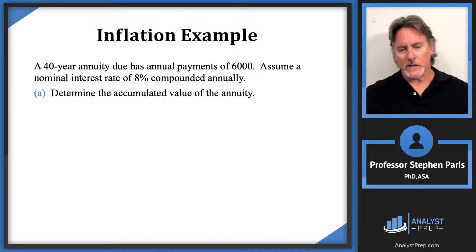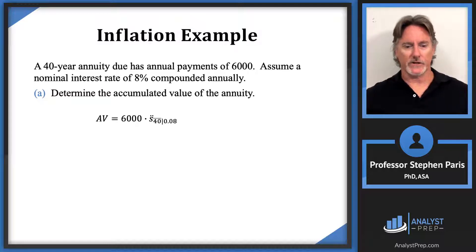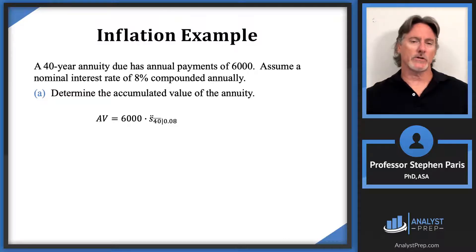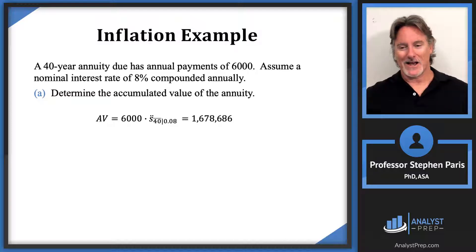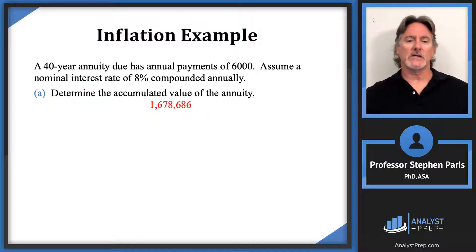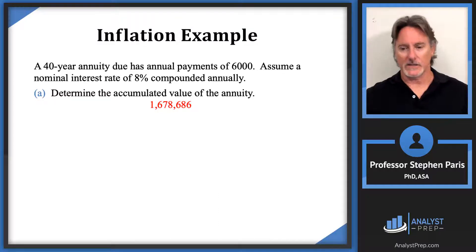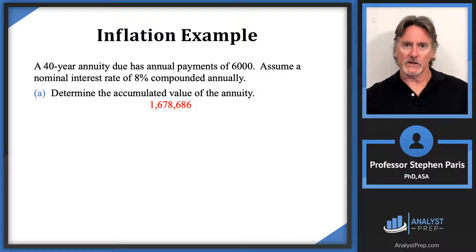The accumulated value is going to be six thousand times s-double-dot angle 40 at eight percent. Use your TVM buttons on the calculator and you'll get that our answer is one million six hundred and seventy-eight thousand six hundred eighty-six. That's easy enough, so now let's tie in some inflation.